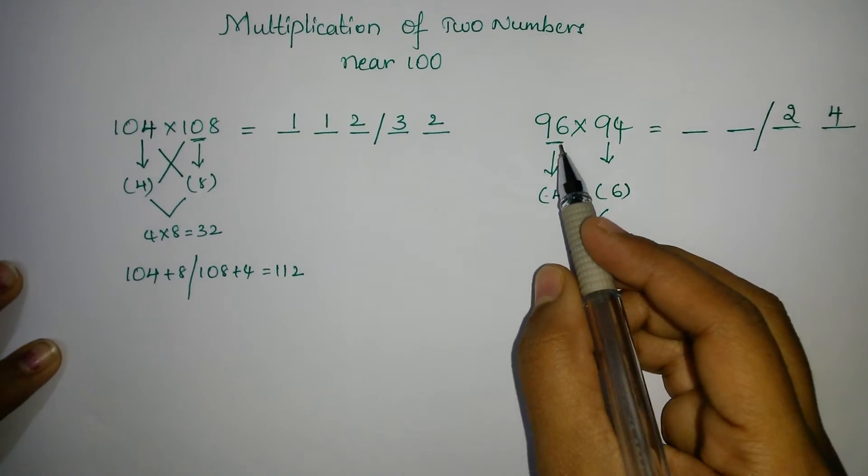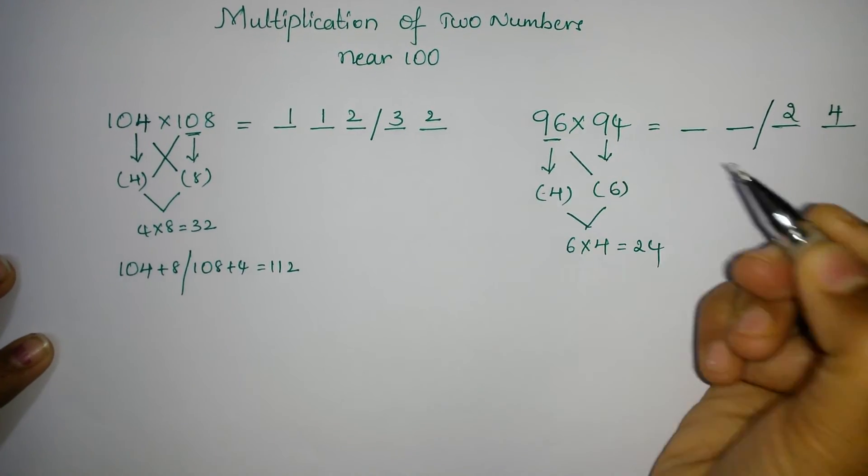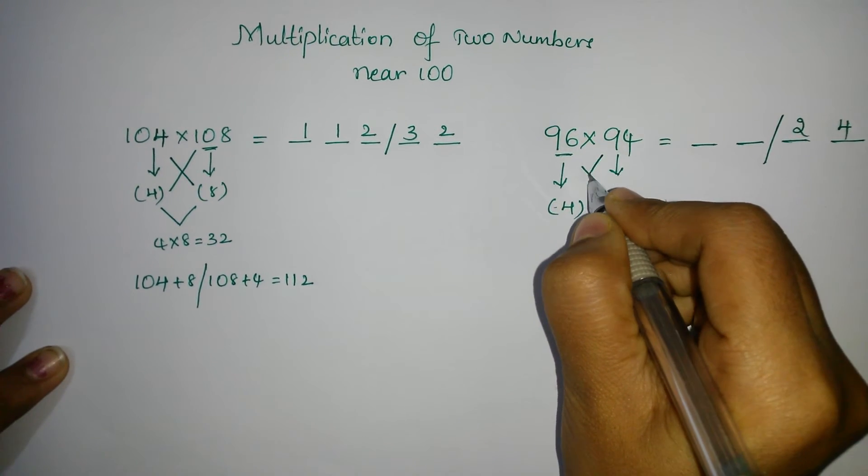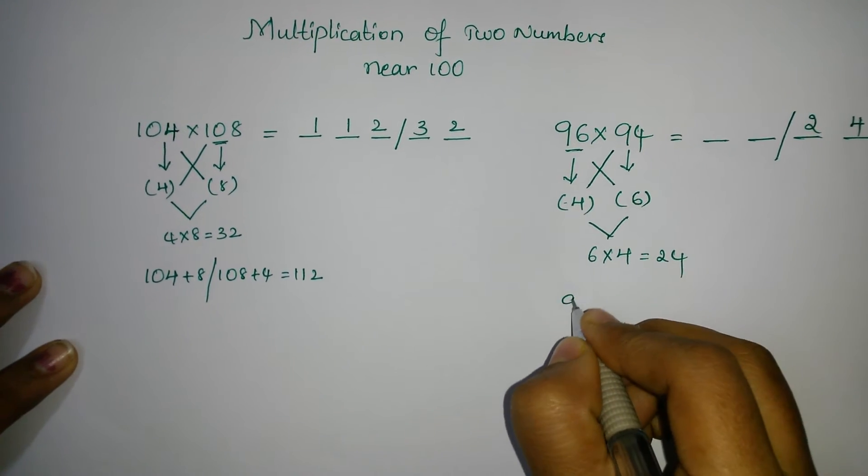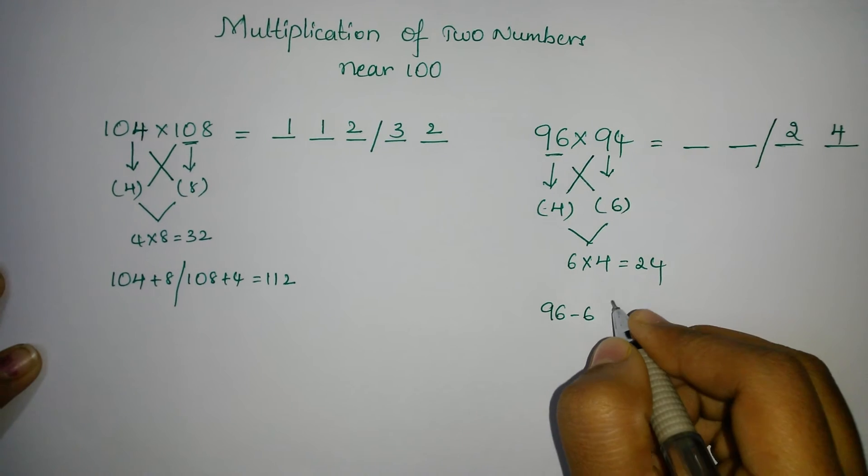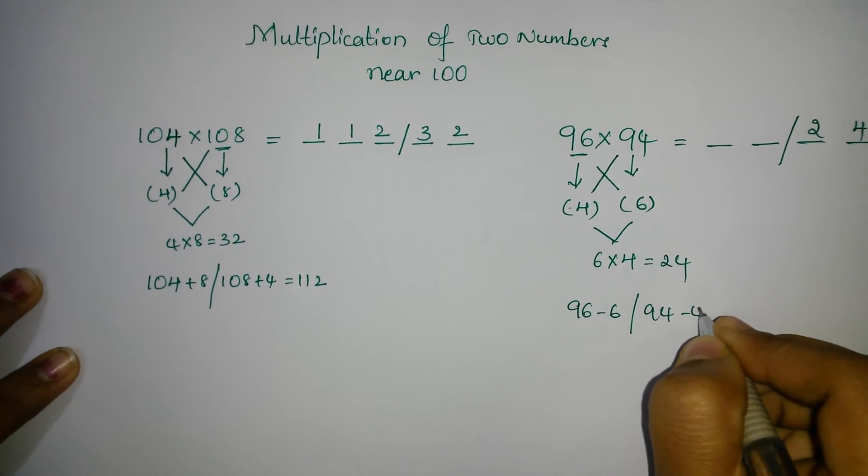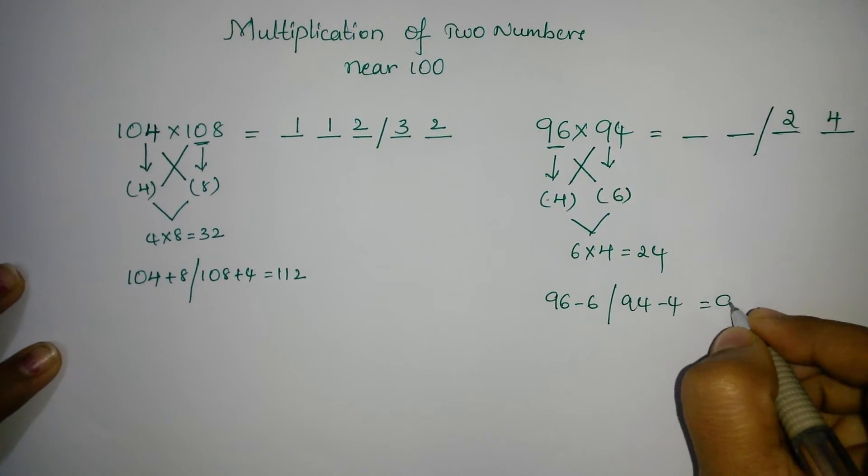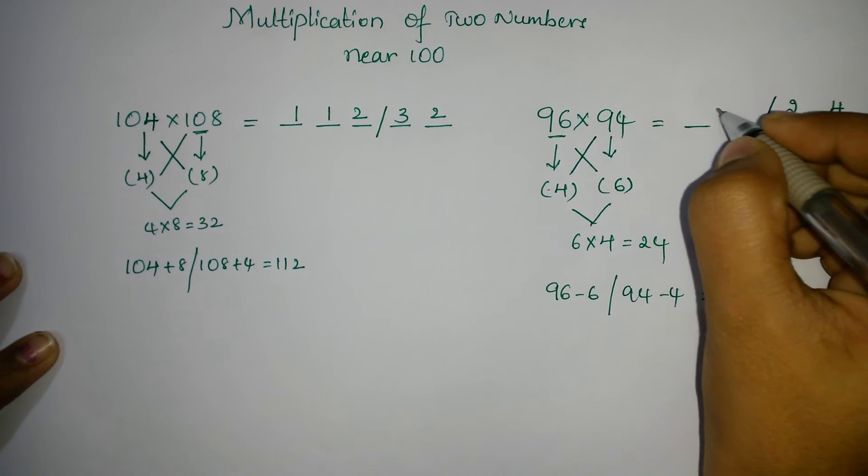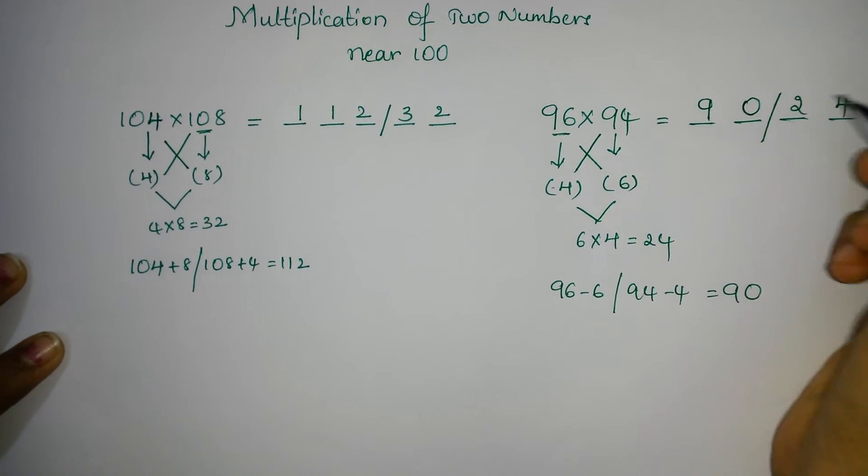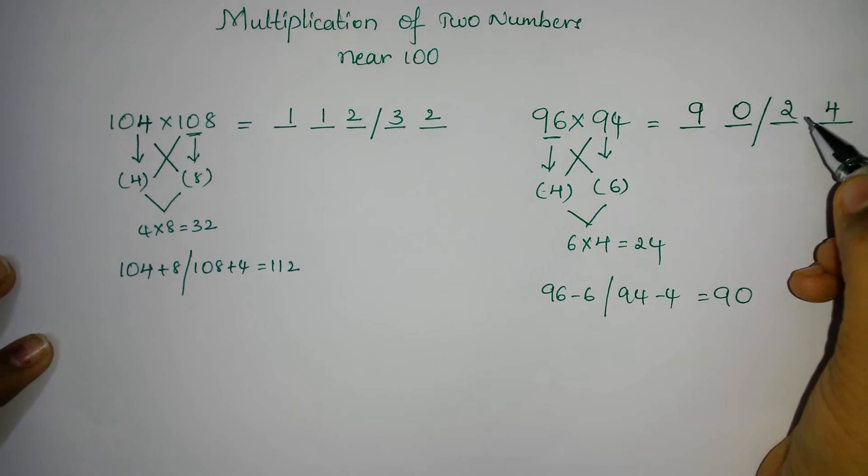Now, what you have to do is, 96 minus 6 and 94 minus 4. 96 minus 6 or 94 minus 4. When you do these both, you will get the answer as 90. Now, write this 90 in the left part. So the answer will be 9024.